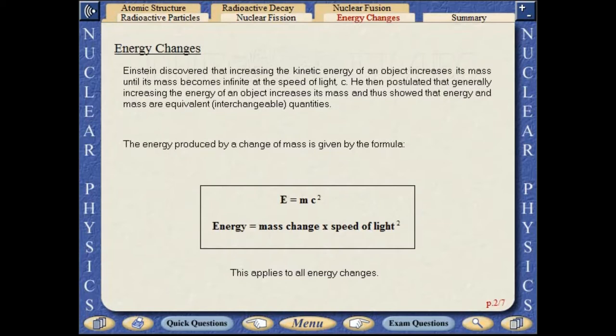Einstein found that increasing the kinetic energy of an object leads to an increase in its mass until its mass becomes infinite at the speed of light. He then postulated that, generally, increasing the energy of an object increases its mass and thus showed that energy and mass are equivalent or interchangeable quantities.